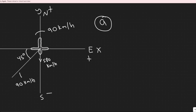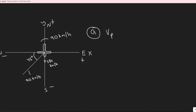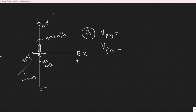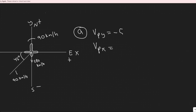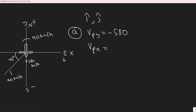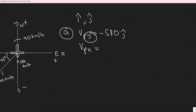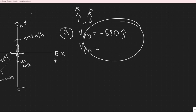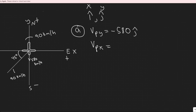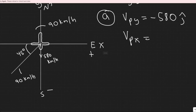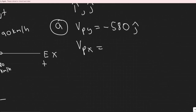The velocity of the plane is vp, split into vpy and vpx — velocity of the plane in the y and x. In the y direction, it's traveling 580 kilometers per hour southward, so it's negative: vpy = −580 j-hat. The y direction uses j-hat and the x direction uses i-hat. Since it's only heading due south, it's not traveling in the x at all, so vpx = 0 i-hat, which we can ignore.